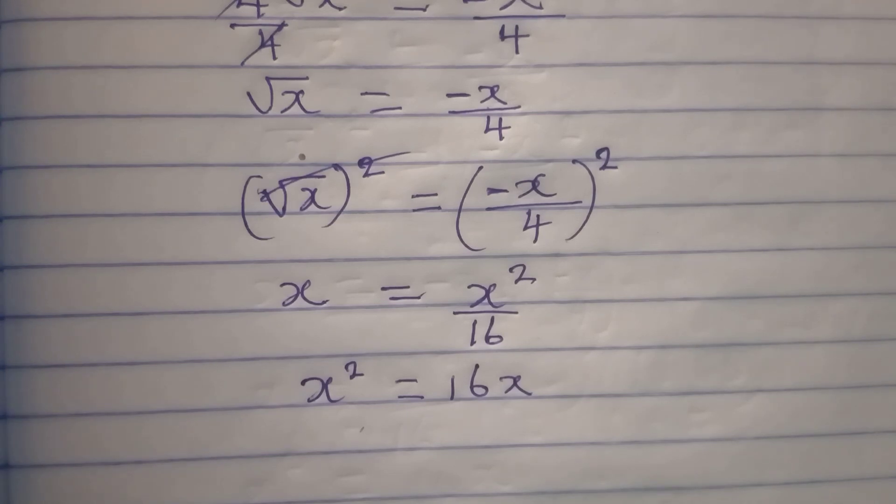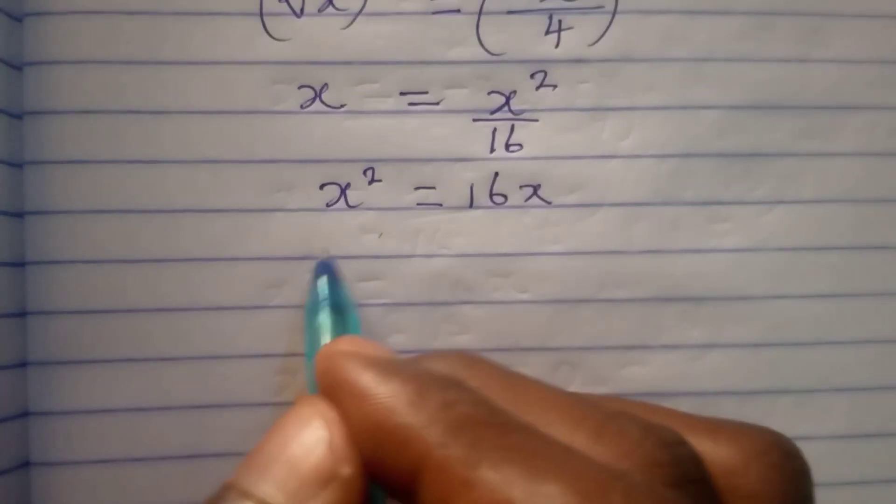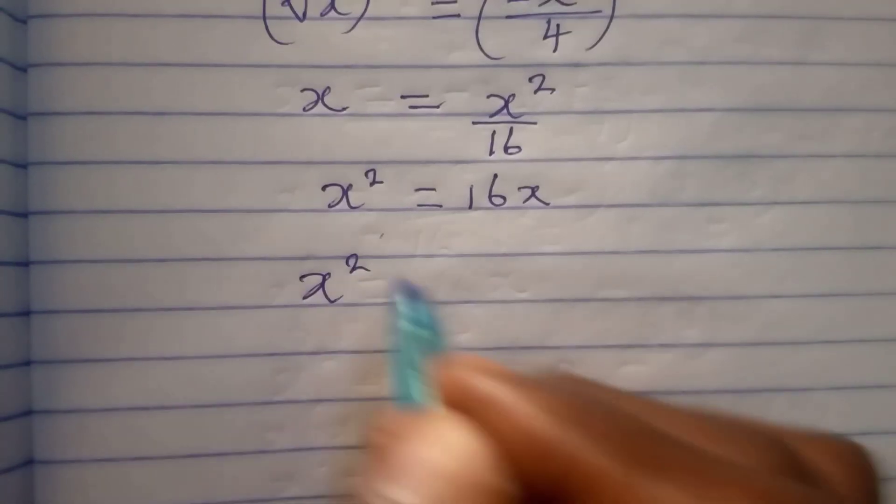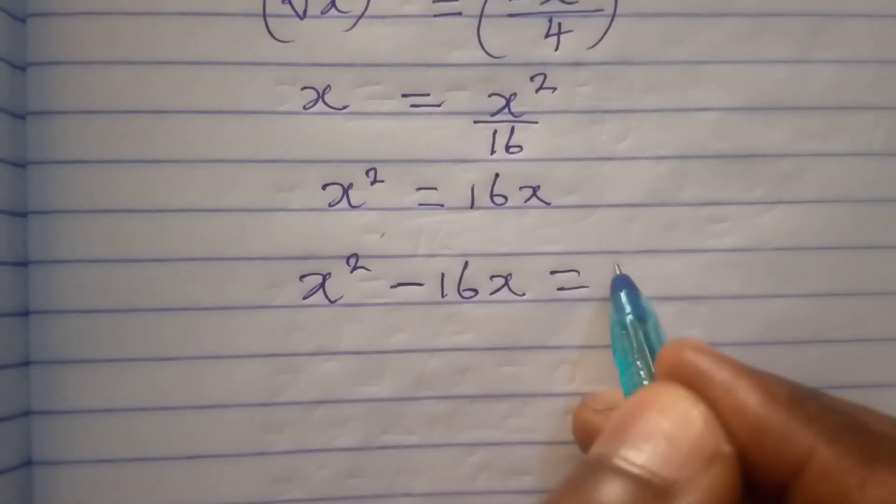From here I will bring everything to the same side, so I have x squared minus 16x to be equal to zero.